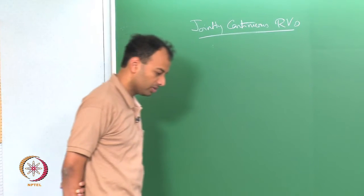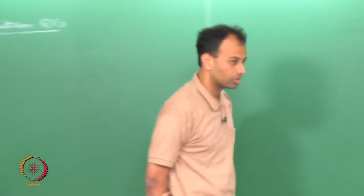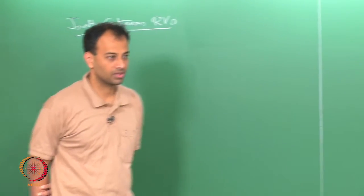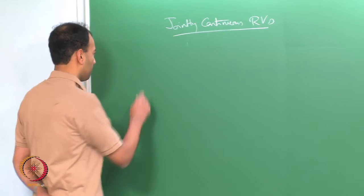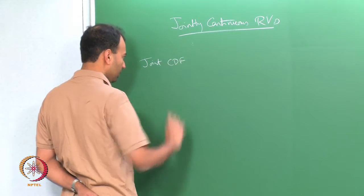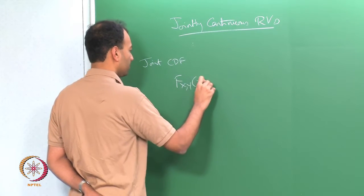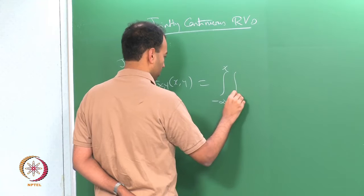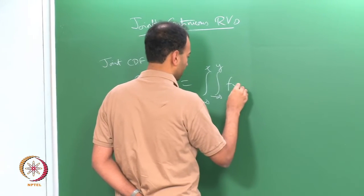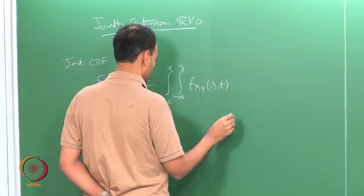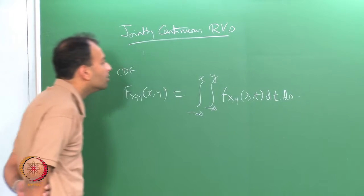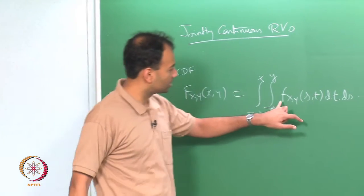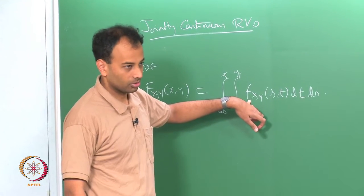We invoked the Radon-Nikodym theorem and said that the probability law P_{xy} can be written as the integral of some non-negative measurable function with respect to Lebesgue measure lambda. From there it followed that the joint CDF can also be written as an integral: F_{xy}(x,y) = integral from minus infinity to x, minus infinity to y of f_{xy}(s,t) dt ds. And this little f_{xy} is what we interpret as the joint probability density function.